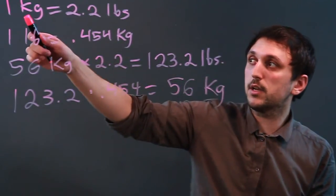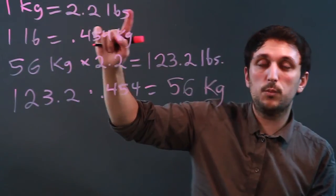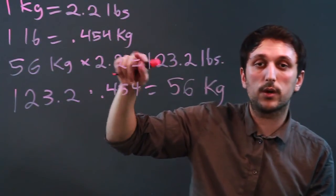So again, the basic conversion is one kilogram equals 2.2 pounds, and one pound equals 0.454 kilograms.